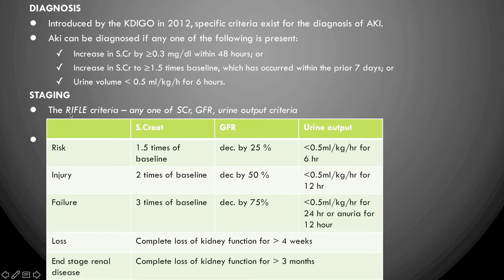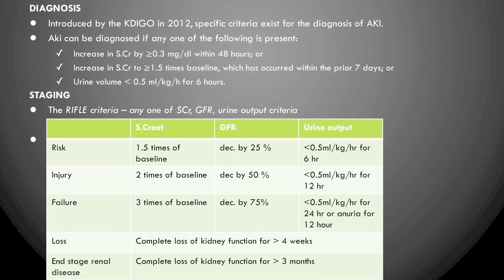AKI can also be staged using the RIFLE criteria — an acronym standing for Risk, Injury, Failure, Loss, and End-stage renal disease. The Risk stage: creatinine greater than 1.5 times baseline, GFR decreased by 25%, or urine output less than or equal to 0.5 mL/kg/hour for six hours. The Injury stage: creatinine two times baseline, GFR decreased by 50%, or urine output less than 0.5 mL/kg/hour for 12 hours.